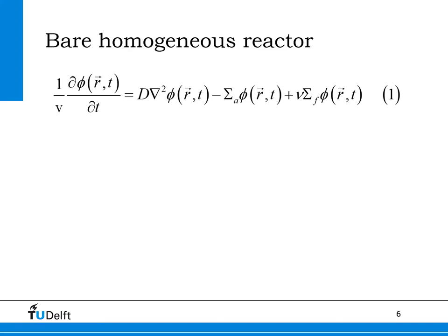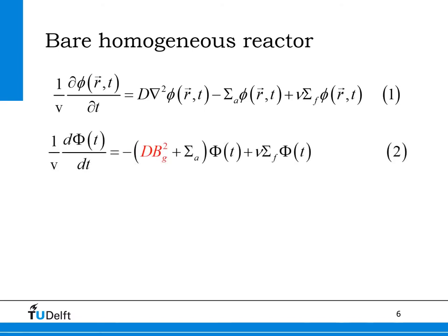Here the time-dependent diffusion equation is shown again, but now with the diffusion coefficient in the first term on the right-hand side before the divergence term. This is valid if the composition of the reactor core is homogeneous. In the derivation of the point kinetics equations, we also assume that the flux in the reactor core is in the fundamental mode. This implies that the leakage term can be rewritten in terms of the geometrical buckling, as shown in red in equation 2. We have also integrated the neutron flux over the whole volume of the reactor core; this total neutron flux is indicated with capital phi and is only depending on time.